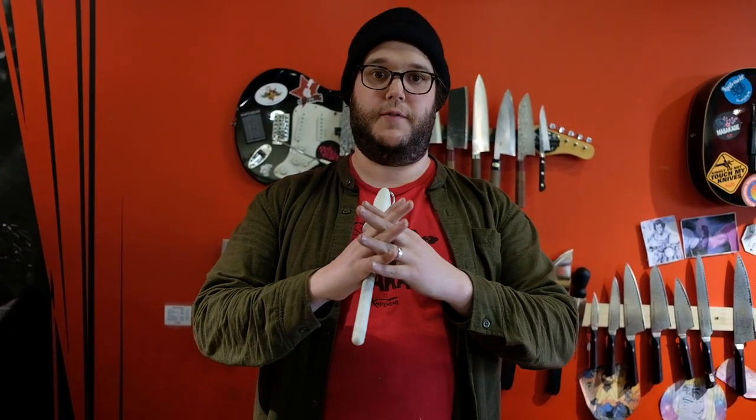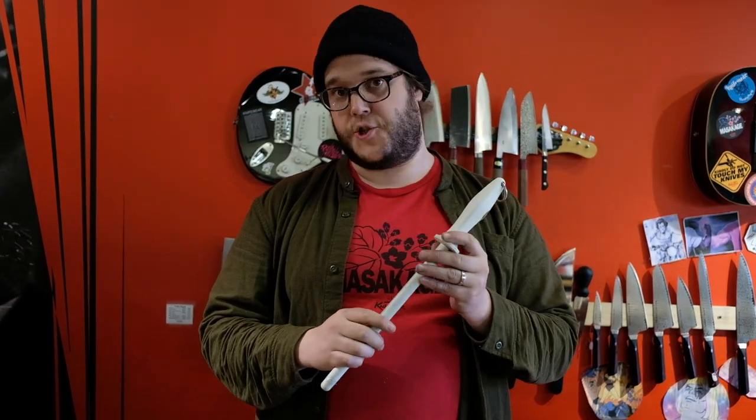Ceramic honing rods are awesome. They're different from steel or diamond rods because they're really hard and smooth. Instead of grinding material off your edge, they push all the burrs and imperfections that develop with use back into place, so your knife stays sharper longer without removing any steel.